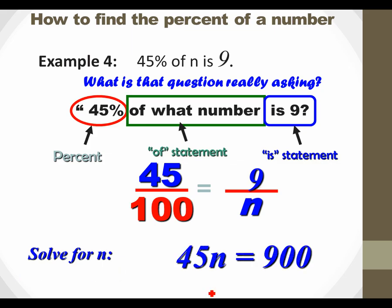Cross multiply. 45 times N is 45N. 100 times 9 is 900. So here's an example of one where we're not dividing by 100. And I know some of you, especially those of you that are pretty savvy, a lot of you basically just go, I'm just going to do 100 times 9 divided by 45. I get that. I understand it. But just be prepared to be able to explain your algebra and show your work.